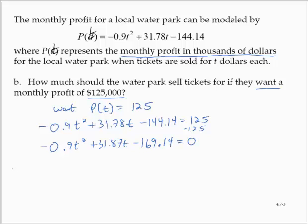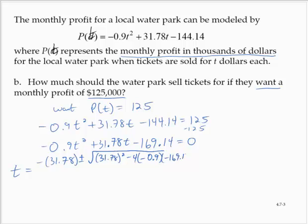Applying the quadratic formula, we would have t = (-31.78 ± √(31.78² - 4(-0.9)(-169.14))) / (2(-0.9)). That's all divided by 2 times -0.9.